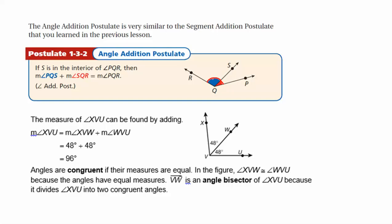So if the sum of the parts equals the whole, that's basically the same as the segment addition postulate. So if we had labeled this angle 1 and angle 2, angle 1 plus angle 2 will equal measure of angle RQP. Also, if you have two congruent angles, then this ray right here, ray VW, would be the angle bisector. An angle bisector cuts an angle into two congruent parts.